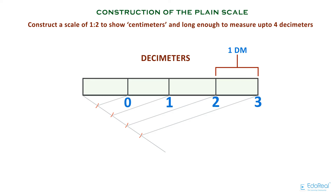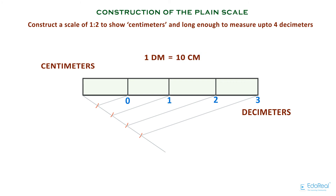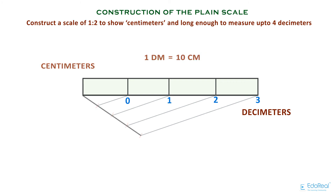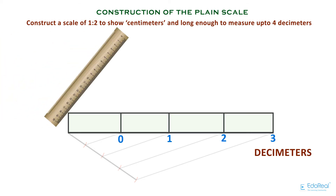To the right of the scale we have units — decimeters — so let's write 'decimeters' to the right of the scale. To the left of the scale, we will have sub-units, that is centimeters. From point 0 to the left, we will have centimeters. We know 1 decimeter equals 10 centimeters, so we need to divide this 1 decimeter into 10 equal parts. To divide it into 10 equal parts, we follow the same procedure as earlier: draw a line at an angle to the scale.